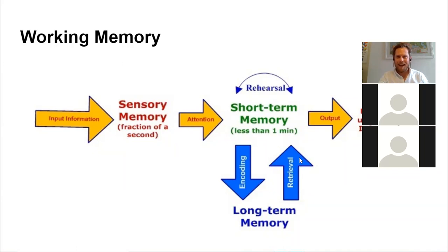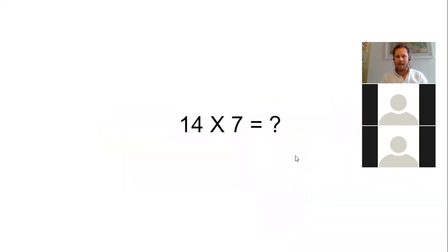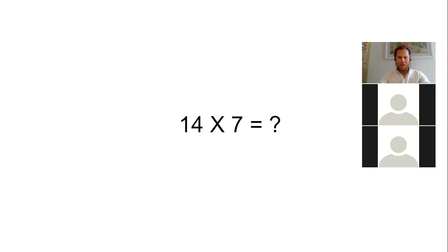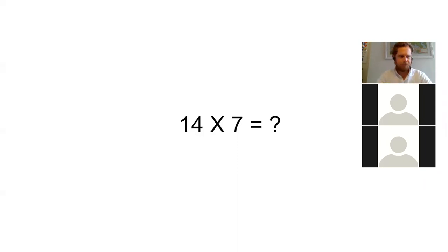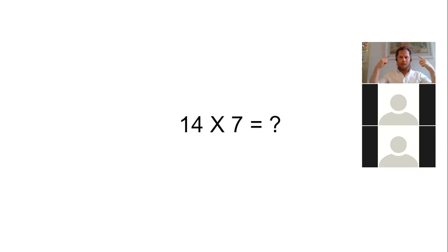I want to demonstrate this through a quick exercise. The question was 14 times 7, and the answer is 98. Whichever way you worked it out — whether you did 10 times 7 and then 4 times 7, or 12 sevens and added 14 — you drew on existing knowledge from that library: your times tables. You broke it down into sections and used your times tables at the back of your mind, then worked it out in working memory.